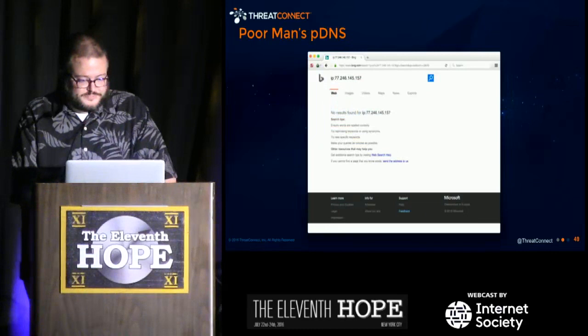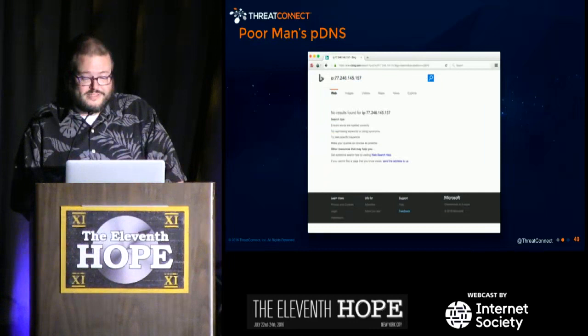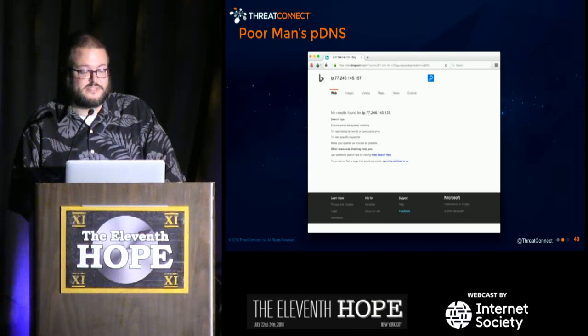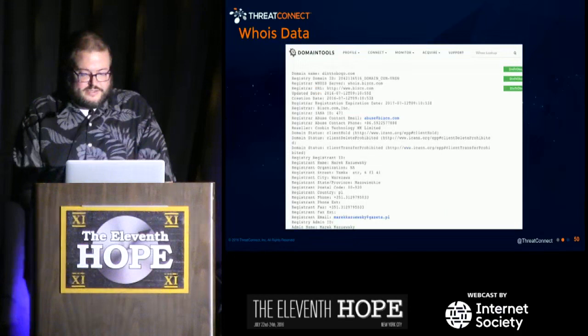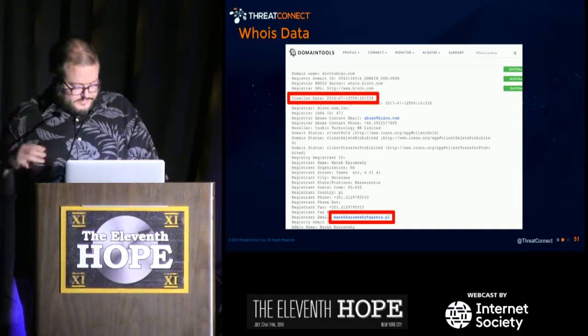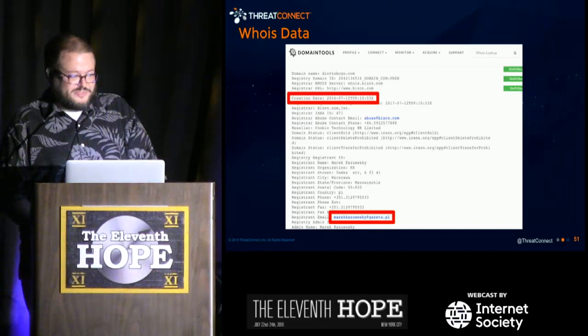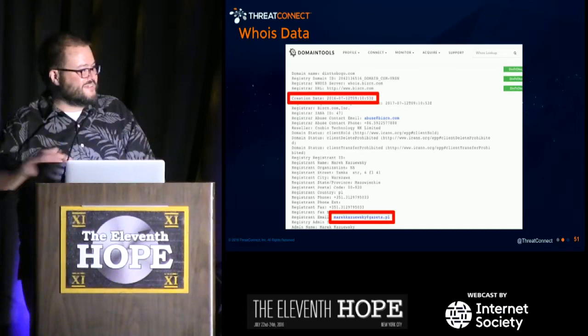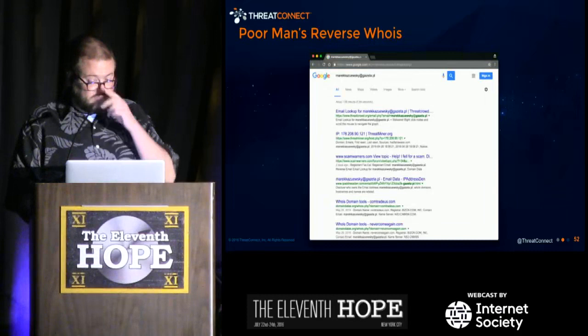The dinttobogo.com IP address 77.246.blah.blah has no poor man's passive DNS — it's not a shared web server, it's a single IP address, which leads me to think something more nefarious is going on. Looking at the WHOIS data, lo and behold this was created on the 12th of this month. We've got a registered email address we can dig into. The registrar is BizCN China, and with Polish East European registration — East Europe is a font of malware — we're looking at something more suspicious.